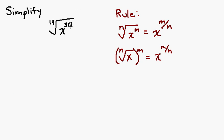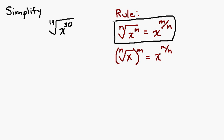The first step in simplifying this radical expression is to notice that 30 and 14 have a common factor of 2, so you can reduce it. Because of the rule for rewriting radicals as exponents, we can rewrite this as x to the 30 over 14, and then reduce that like any fraction. So we get x to the 15 over 7.